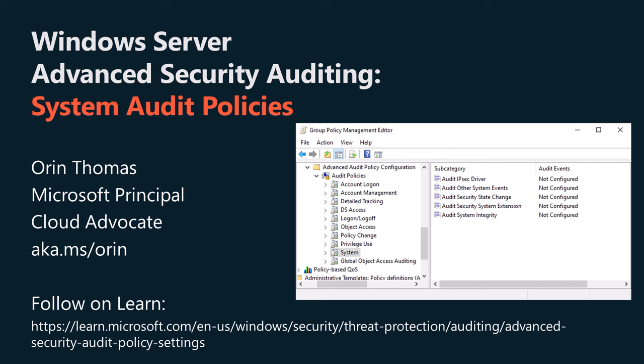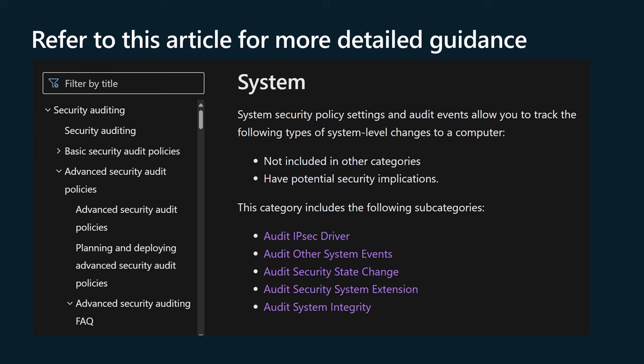System category audit events allow you to track system level changes to computers. This advice is based on the documentation published on learn.microsoft.com at the link in this video's description. This video is part of a series of videos on advanced auditing and related events that will be published in the coming weeks. Some of these topics are a bit dry, but we attempted to make them so you'd be able to review information about advanced auditing in a more digestible format.